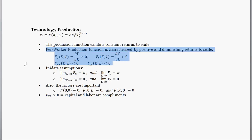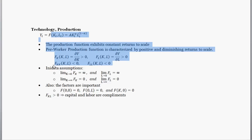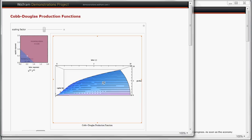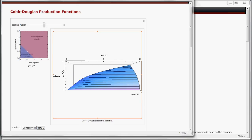We also need to characterize the shape of the production function. We assume that the per-worker production function exhibits positive and diminishing returns. Positive returns means that if we increase capital or labor, we increase production — output always goes up if we increase either factor. Diminishing returns means that as you increase capital, output goes up, but at a decreasing rate. This is shown in a 3D image of the Cobb-Douglas production function: along the labor axis, production is always increasing, but it's going up at a decreasing rate. The shape is concave — like a cave.